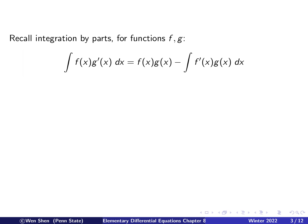Let's say we have two functions f and g, and we want to compute the integral of f times g prime. Then this equals f times g, the non-differentiated function, minus the integral of f prime times g. Note that the prime is moved from g to f on the right-hand side, and there's a minus sign, which will introduce sign changes in our tabular form.